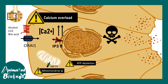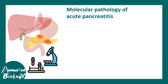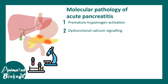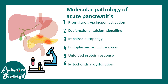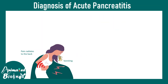The contents of acinar cells are released into the near vicinity, causing further problems. Overall, the molecular pathology of acute pancreatitis involves premature trypsinogen activation, dysfunctional calcium signaling, impaired autophagy, endoplasmic reticulum stress, unfolded protein response, and mitochondrial dysfunction with ATP depletion — all based on the latest research.